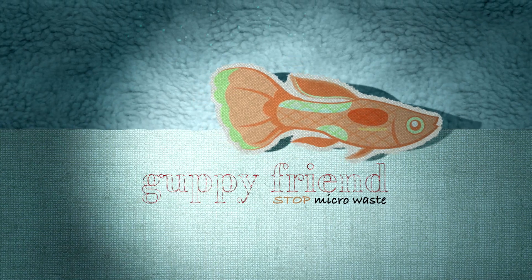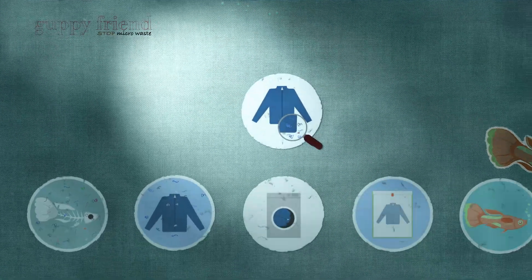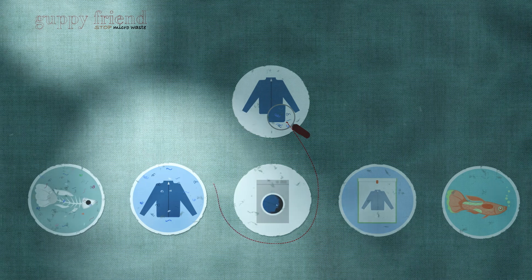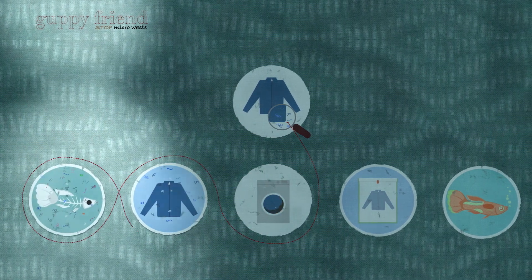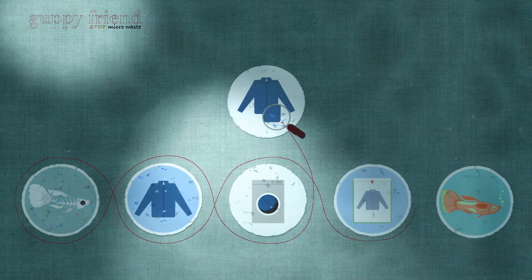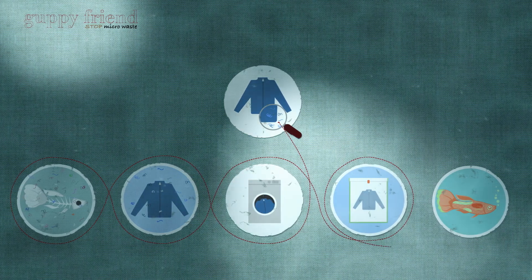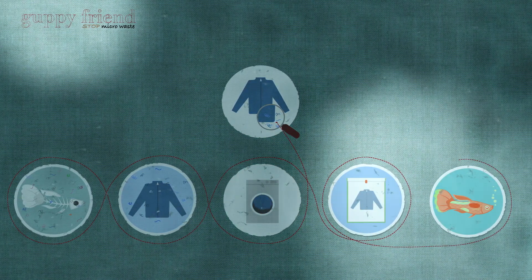Stop microwaste. Microfibers released from washing pollute our water bodies and food supply. The Guppy Friend Wash Bag is the first solution to prevent microfibers from entering into our rivers and oceans.